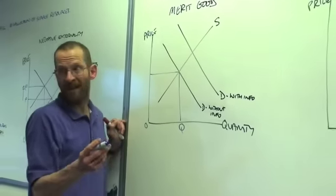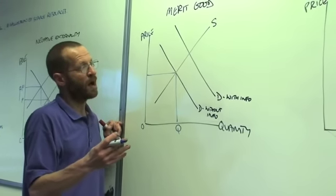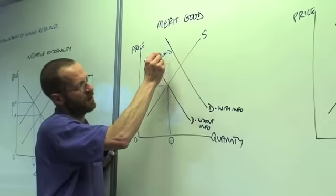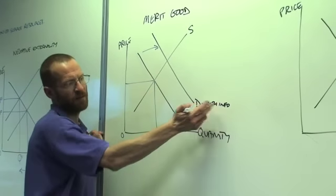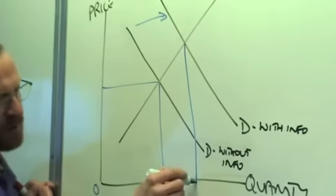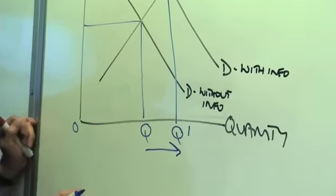But let's say that the government runs an information campaign and people then know how good a product really is for them. In that case, it would shift the demand curve to the right because with the information, more people will demand the product. The result will be an increase in the quantity which would be consumed.